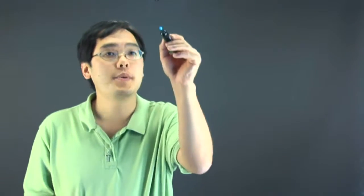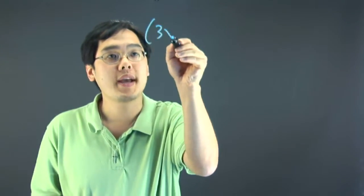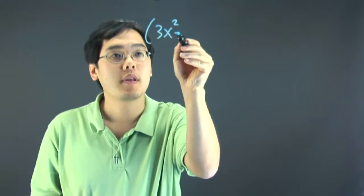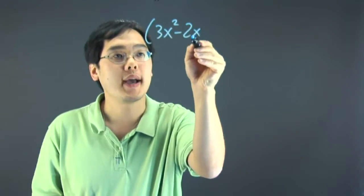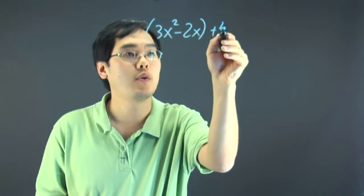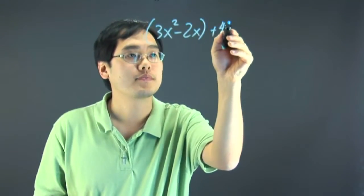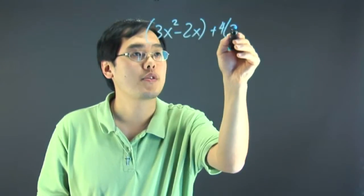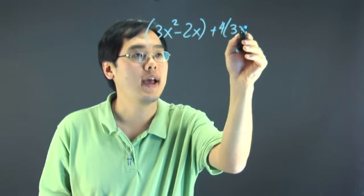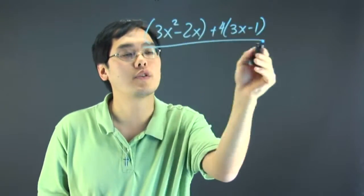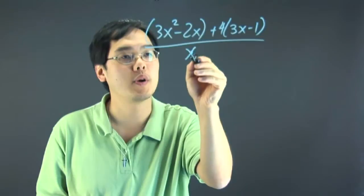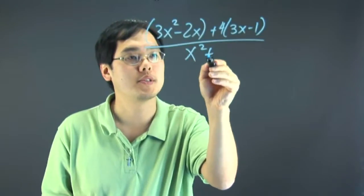You've got to be very careful depending on what the operation is. So let's look at a couple of illustrations and we'll go from there. Suppose you have (3x squared minus 2x plus 4)(3x minus 1) over (x squared plus 1).